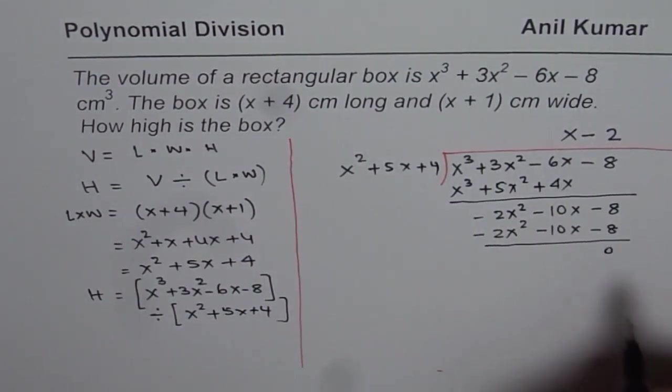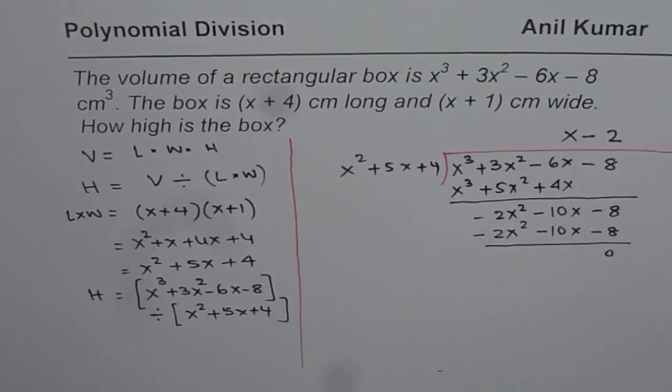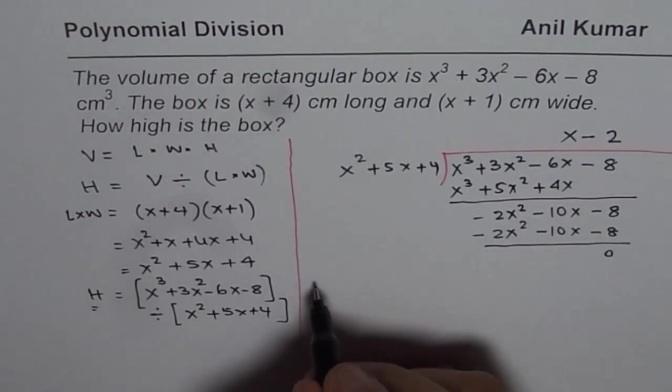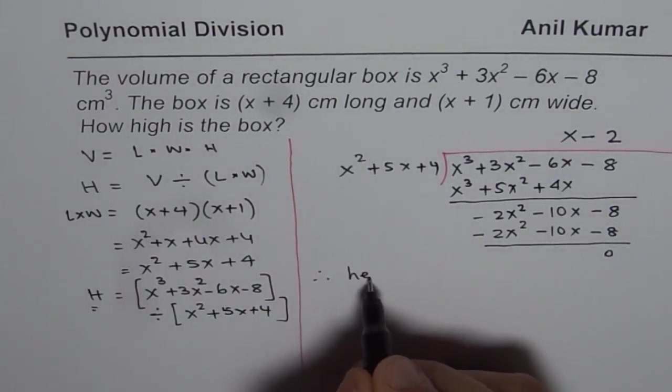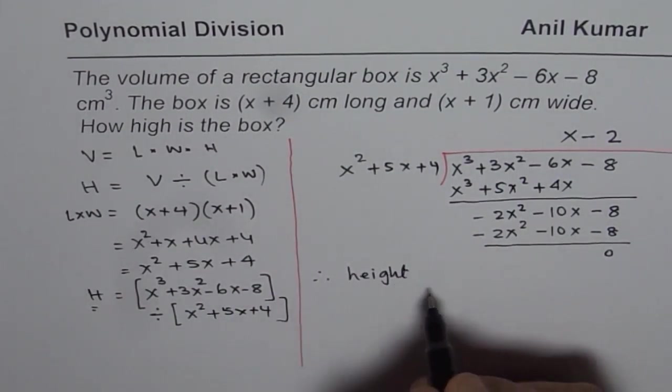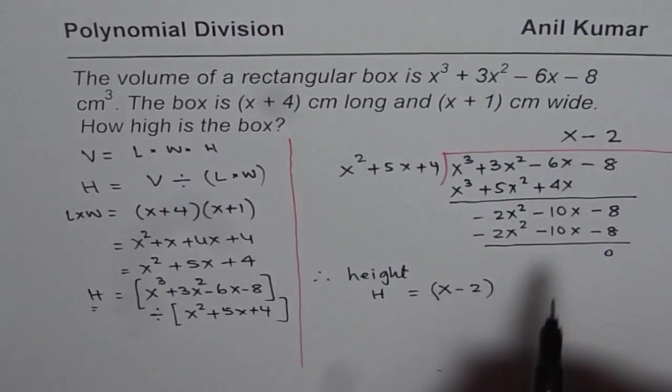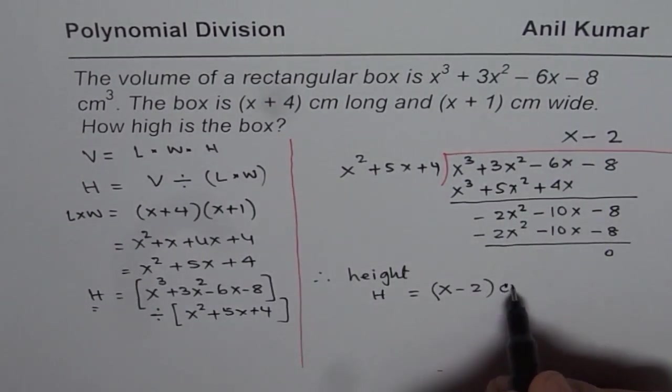When you do -2 times you get -2x² - 10x - 8. The remainder as expected is 0. And this quotient is our height. Therefore the height, in our case H equals (x-2). Don't forget to write the units which says centimeters.